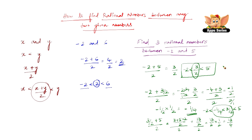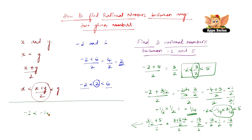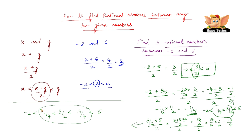So we found the third number as well. Writing the final solution: minus 2 is less than minus 1 by 4, which is less than 3 by 2, which is less than 13 by 4, which is less than 5. Therefore, we've found three rational numbers between minus 2 and 5.